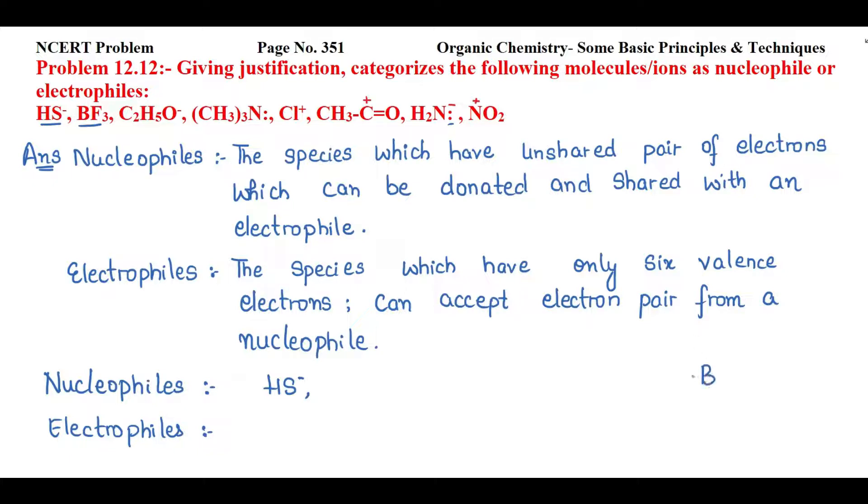Boron ke paas kitne electron hote hai valence 3 electron hote hai. So 3 electron ye definitely fluorine ke saath bond banake complete kar leta hai lekin do electron isse abhi bhi chaiye hai apna octet complete karne ke liye to obviously ye electrophile hoga.